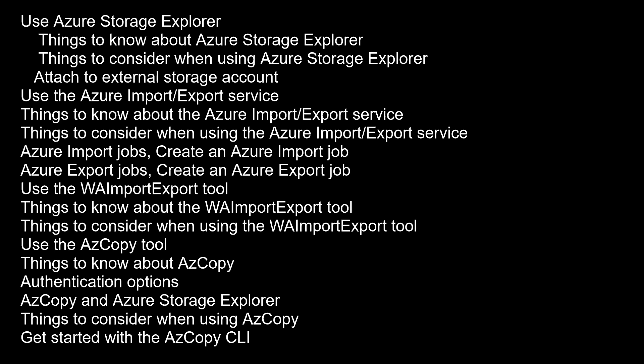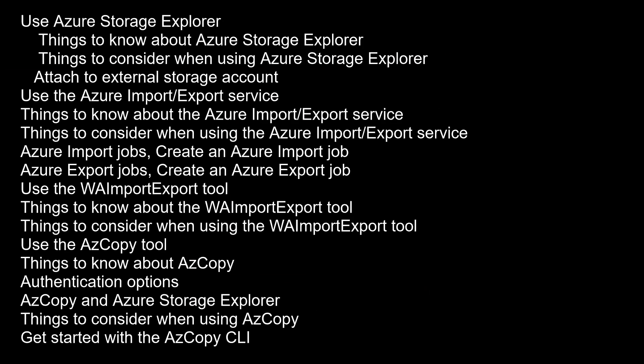You can use the WImport Export tool to complete the following tasks: before you create an Azure Import job, use the tool to copy data to the hard disk drives you intend to ship to Microsoft. After your Azure Import job completes, use the tool to repair any blobs that were corrupted, missing, or that have conflicts with other blobs in your Azure Storage. After you receive your disk drives from a completed Azure Export job, use the tool to repair any corrupted or missing files. The WImport Export tool handles data copy, volume encryption, and creation of journal files, which are necessary to ensure the integrity of the data transfer.